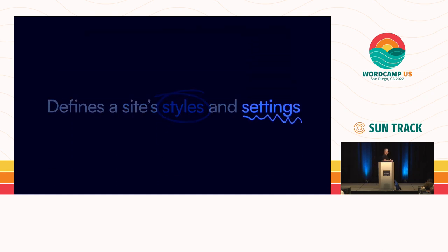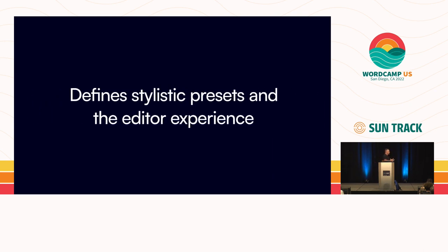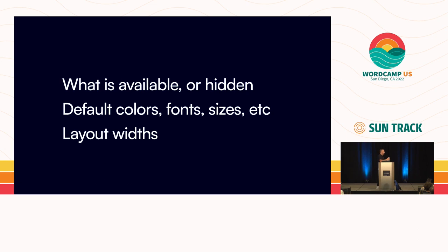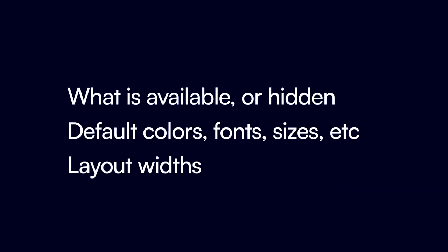That's it for styles within theme.json. Now there's this whole other side of things for settings. Settings of a theme.json file define stylistic presets — like the colors and font sizes you use throughout the site — but also the editor experience. The editor experience is really interesting because you can take a number of controls and either turn them on or off, opt in or opt out by the theme, to tighten down the editor experience. Say you're handing off a site to a client and you want to tighten things up — you can do that now within theme.json in one standardized fashion.